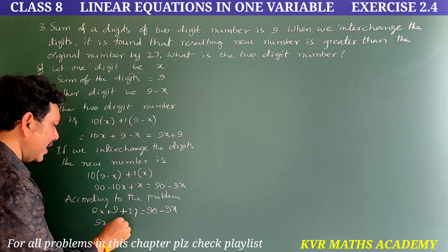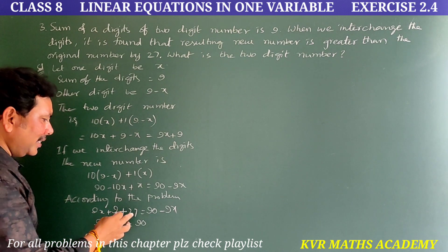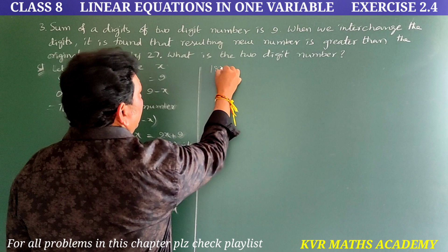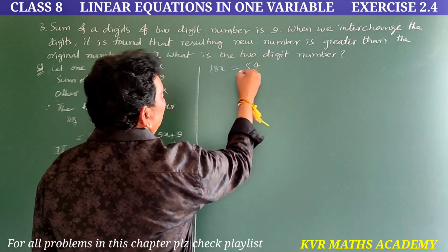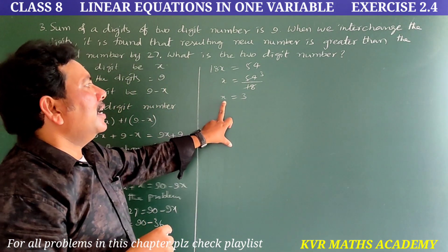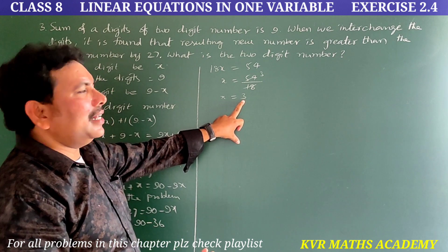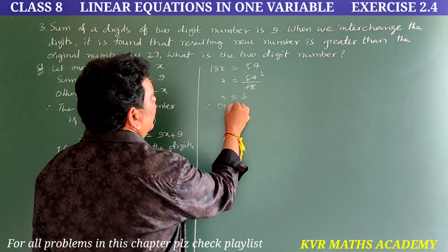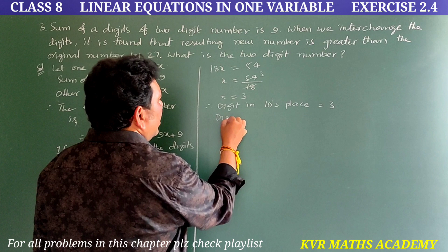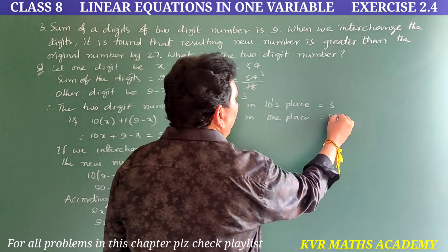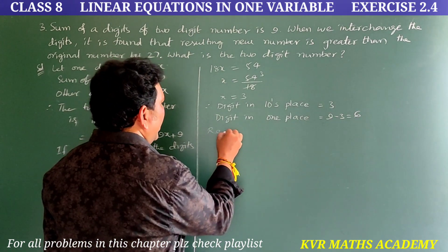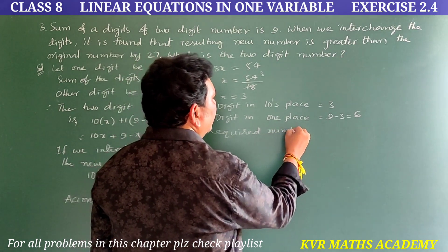Transferring 9X to the other side: 9X + 9X = 90 − (9 + 27), so 18X = 90 − 36 = 54. Therefore X = 54/18 = 3. The digit in the tens place is 3 and the digit in the units place is 9 − 3 = 6. The required number is 36.